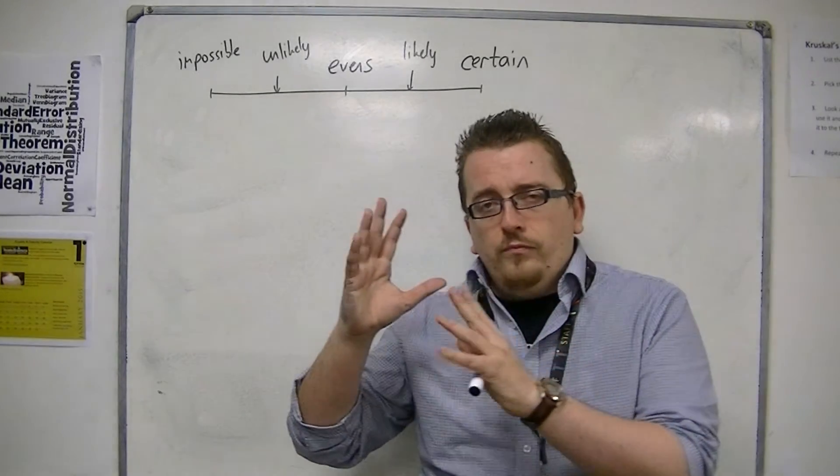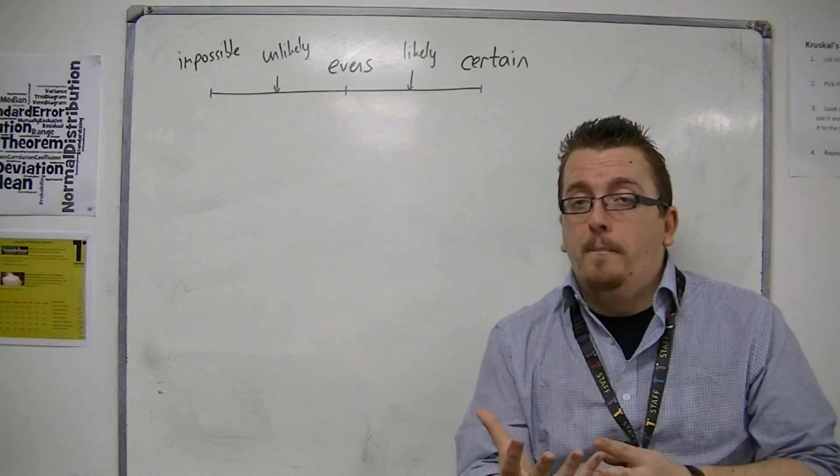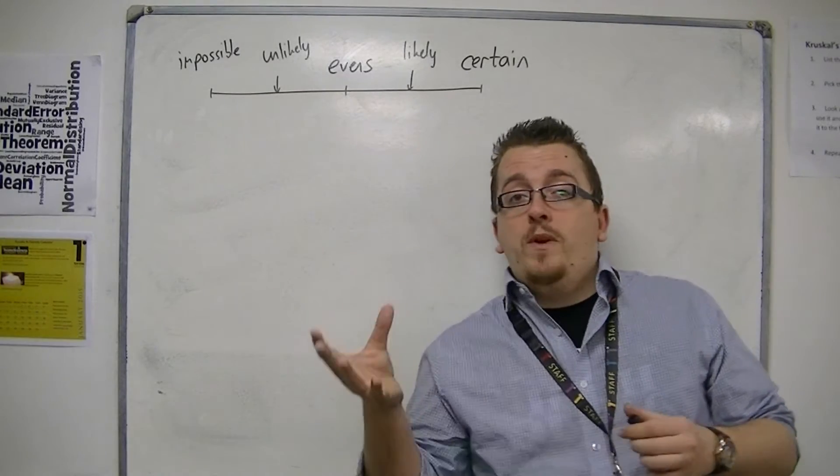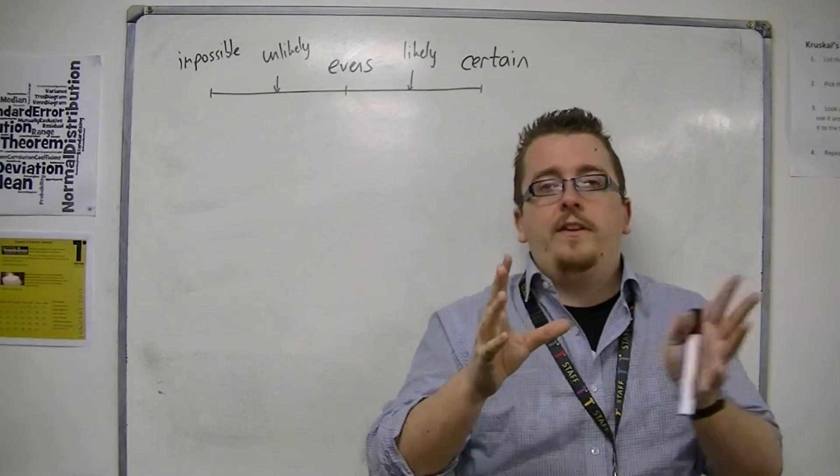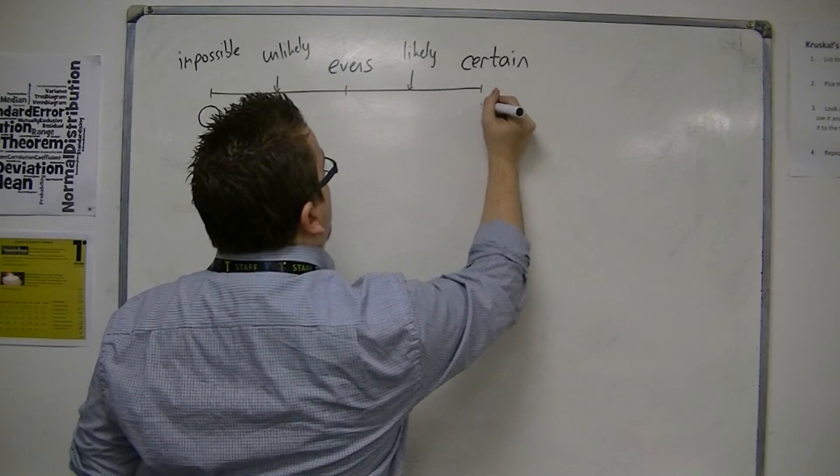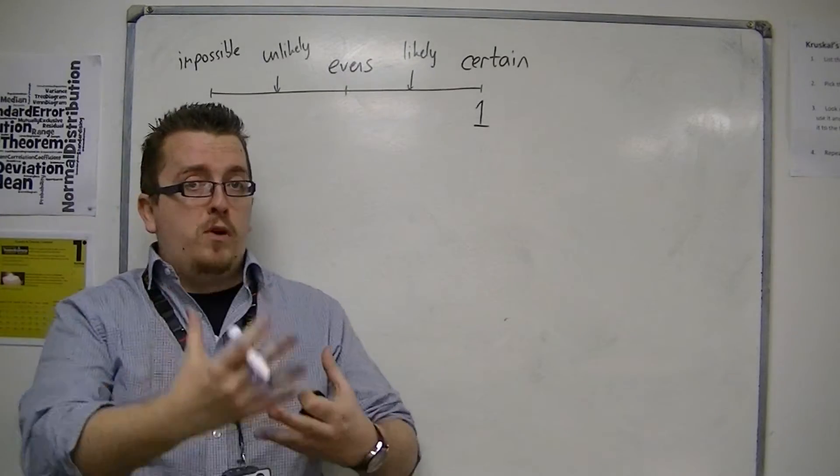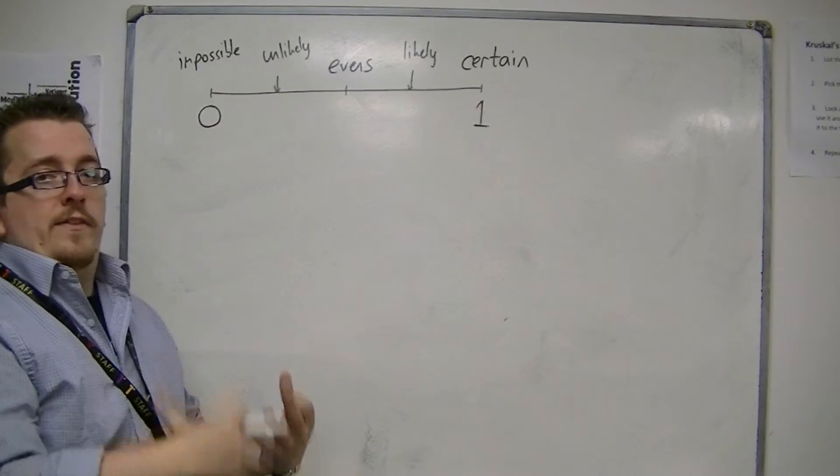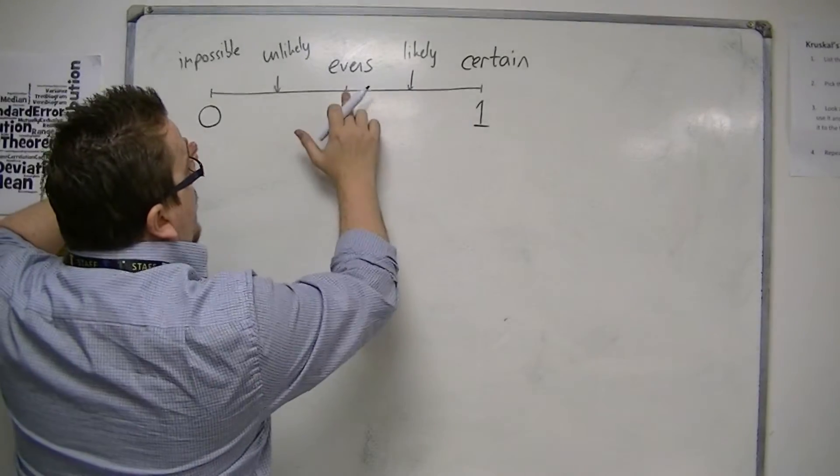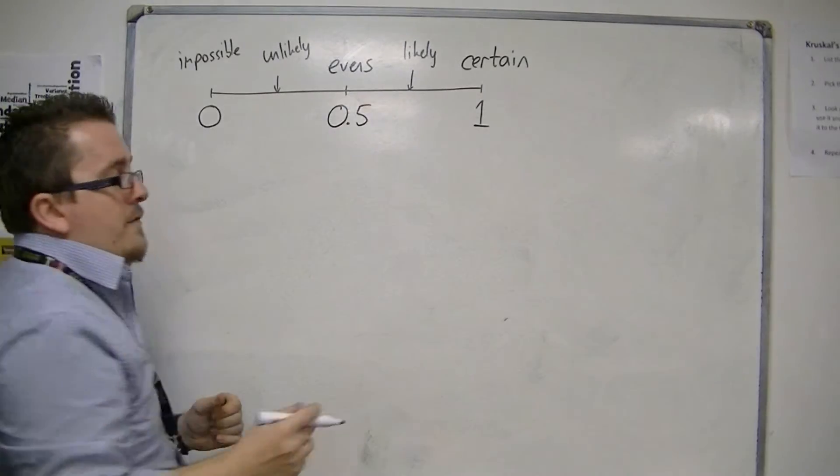So what we're going to do is we're going to take impossible to have a number, and certain to have a number. So it'd be nice if we could rate probabilities from 0 up to 1. And so if an event had a probability of 1, then it would be certain. So halfway between this evens, well, that'd be 0.5. So evens and 0.5 are synonymous.